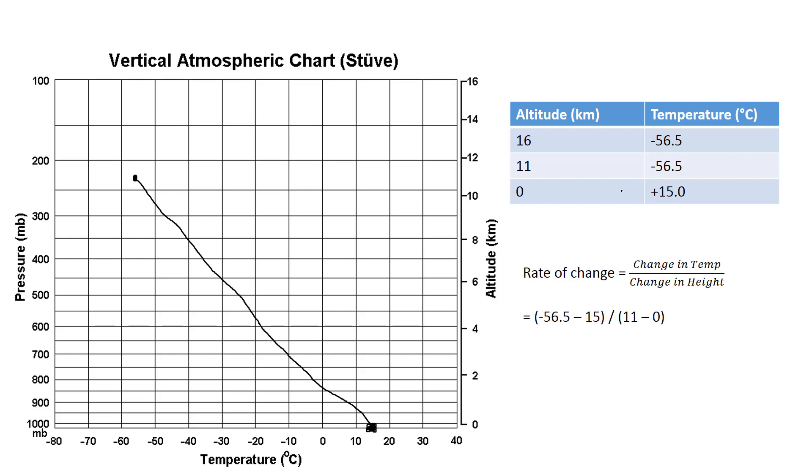And then the next dot is at 16, and again, negative 56.5. And that's going to be up here at a height of 16 kilometers, and negative 56.5. And then you connect that, and what this is, is this line is what we call a temperature profile. And basically, it just shows how temperature changes with height in the atmosphere.